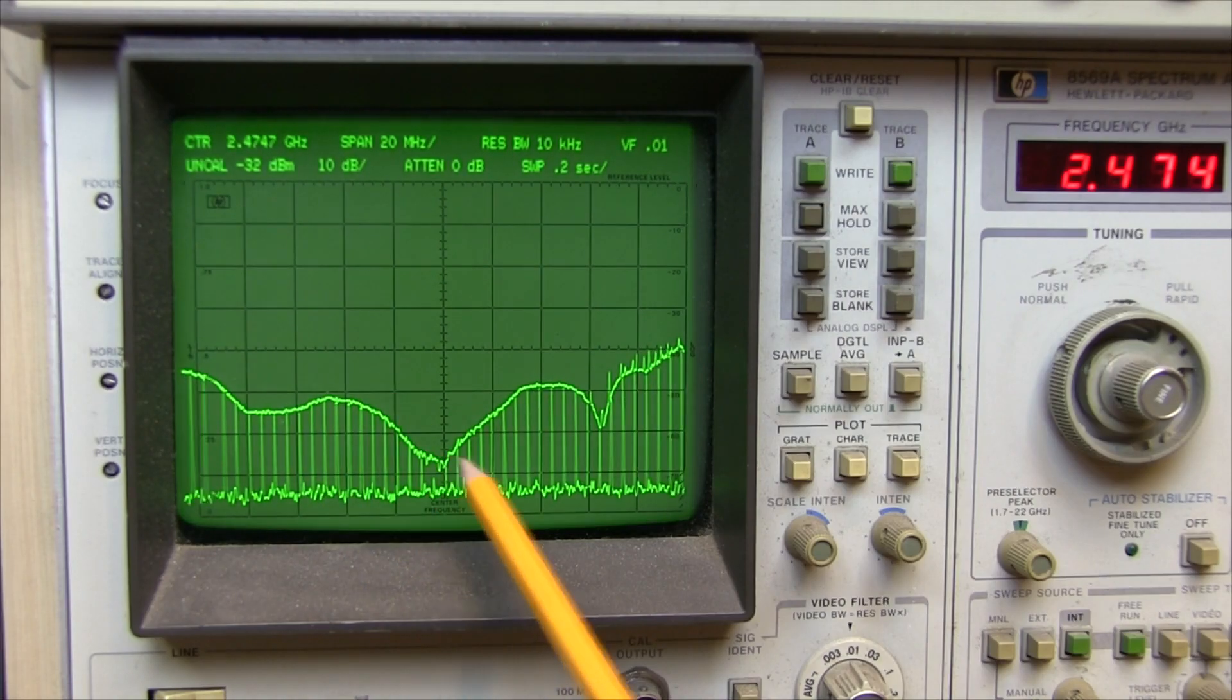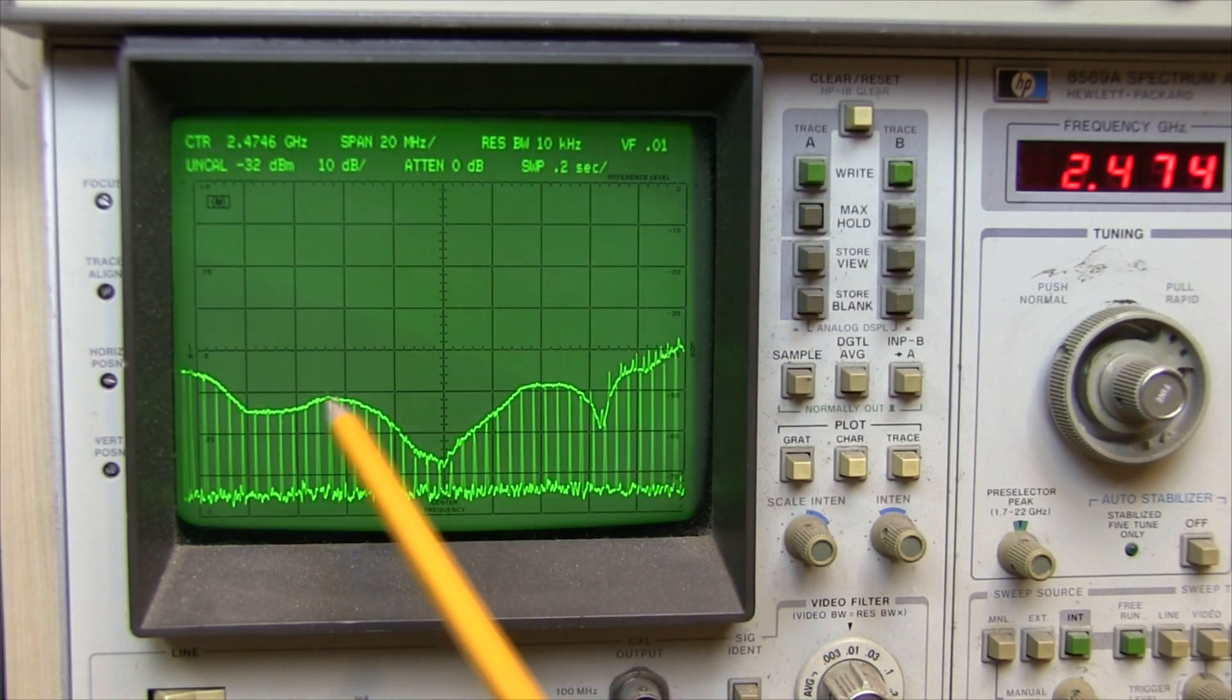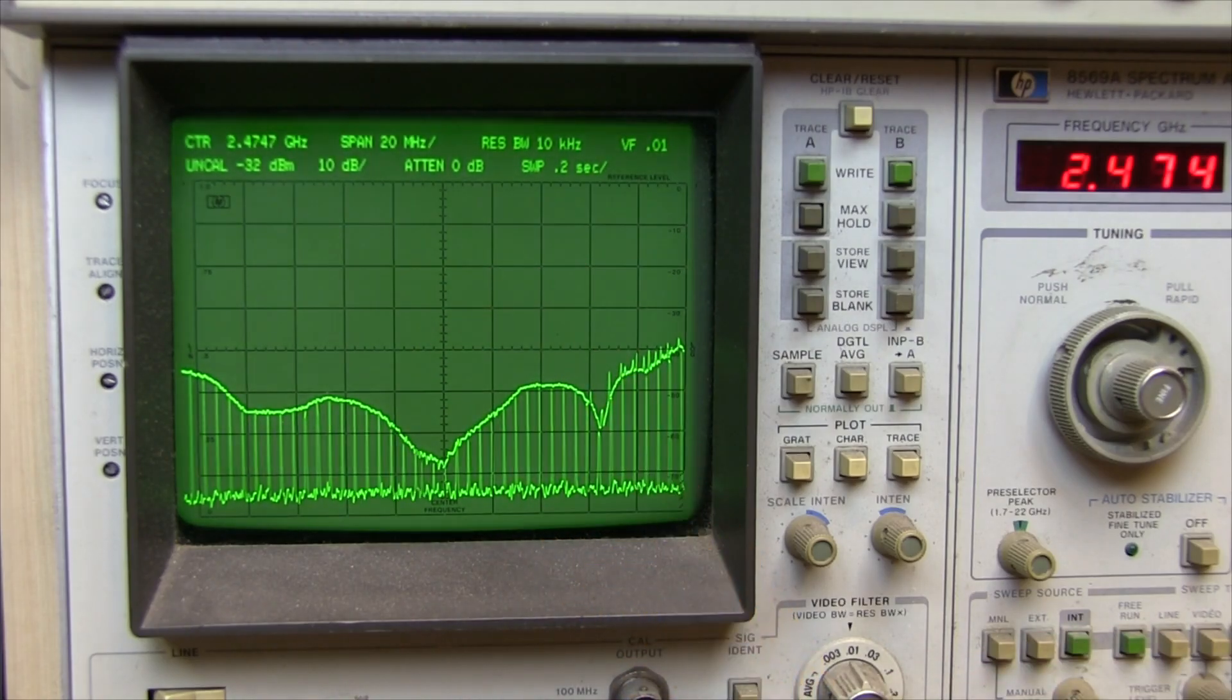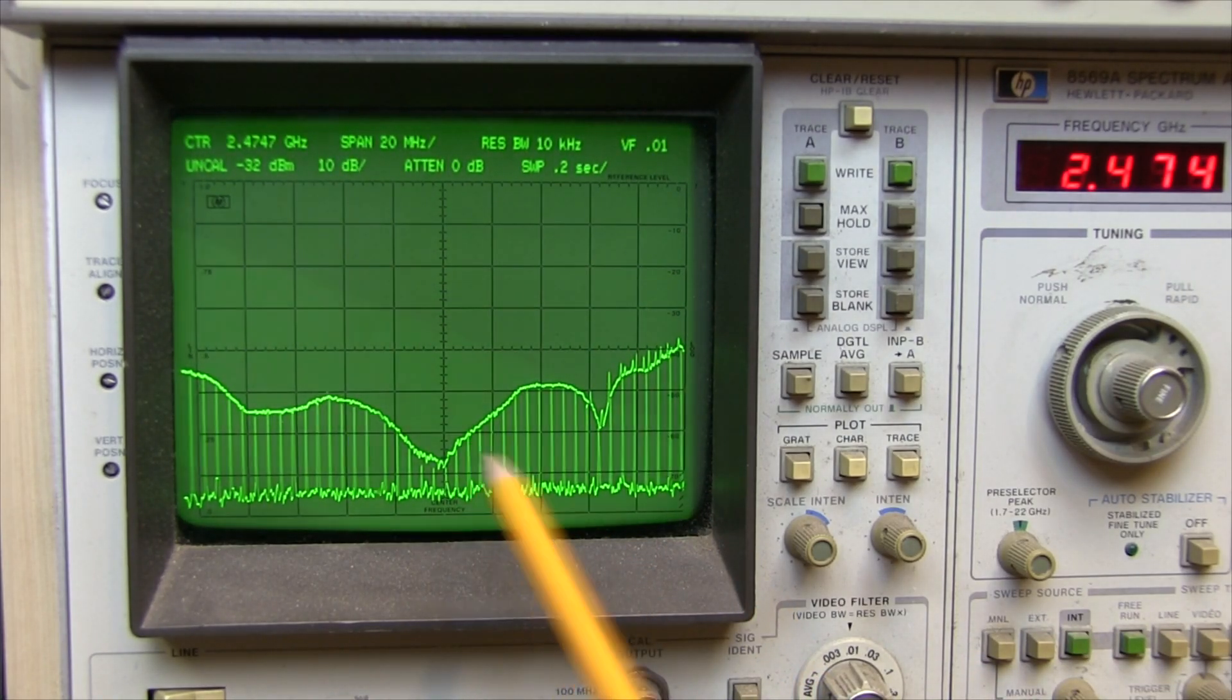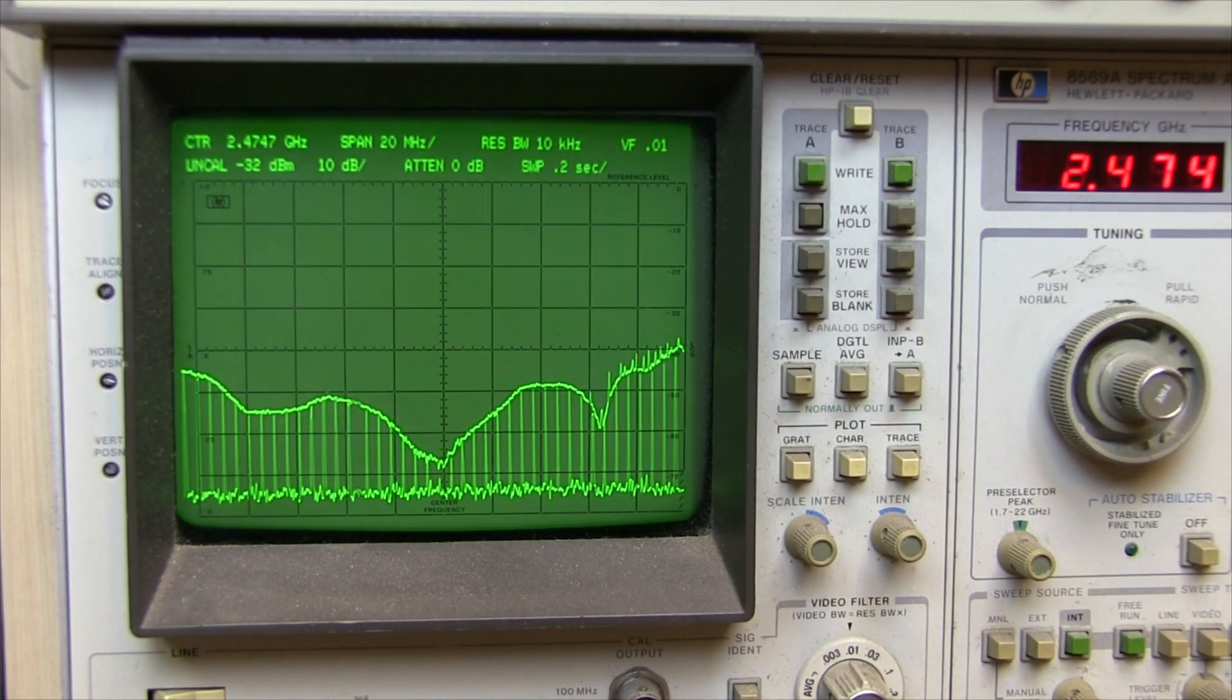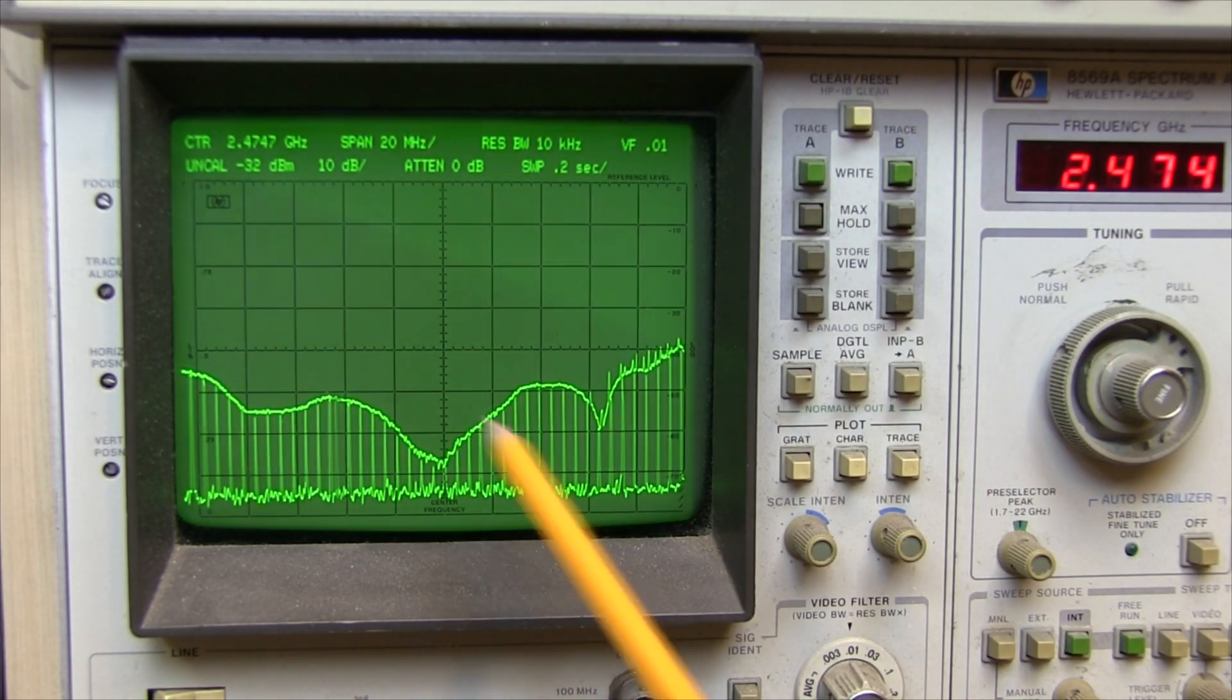We're scanning 10 dB per division, and yeah, a very nice output for the Wi-Fi spectrum. But you'd expect that from an HP antenna, especially one that cost an absolute fortune back in the day.